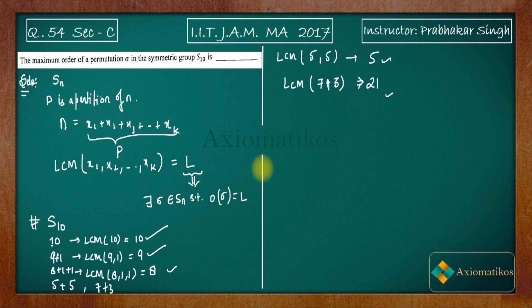You cannot write all the partitions of 10. Now see, just like I wrote a partition 7 plus 3 and I got LCM 21, in such a way you have to do something like this: 5 plus 3 is 8, plus 2 is 10. So what is the LCM of 3 and 2? It is 6. What is LCM of 6 and 5? It is 30. So LCM will be 30.